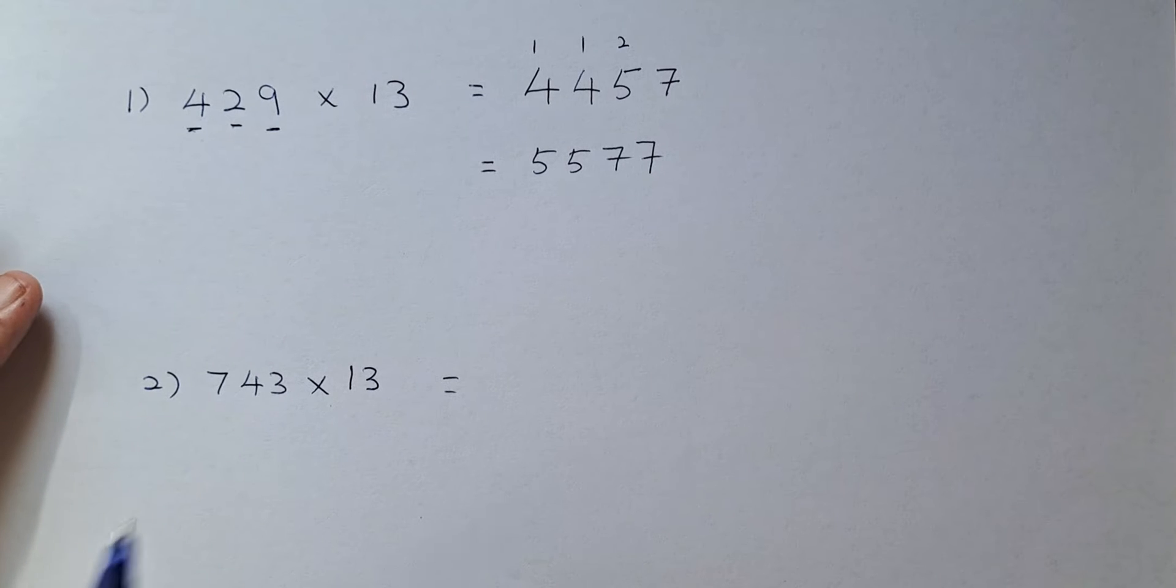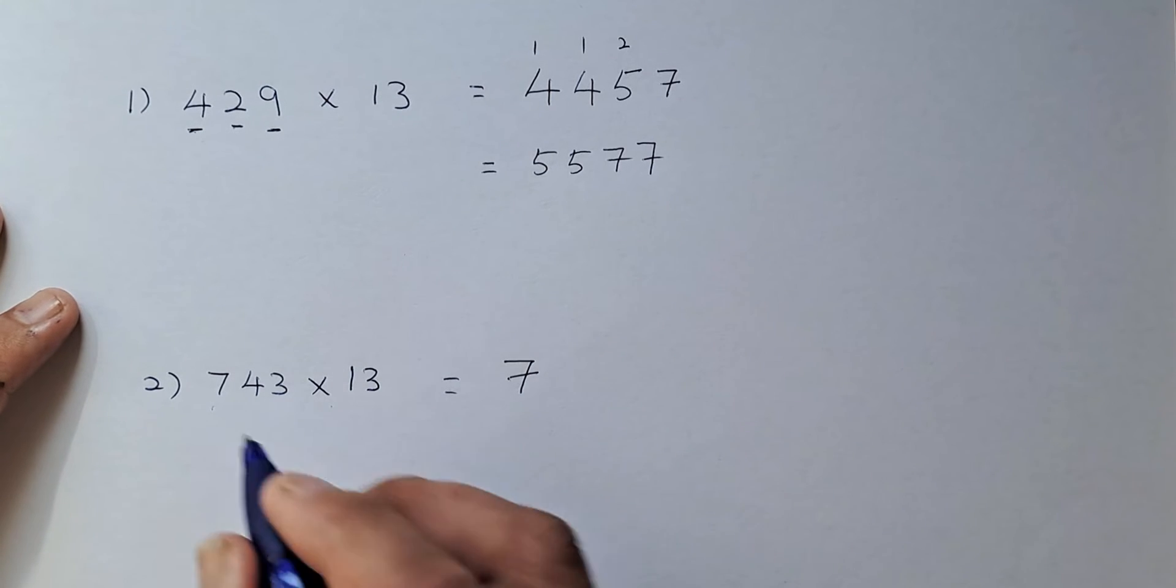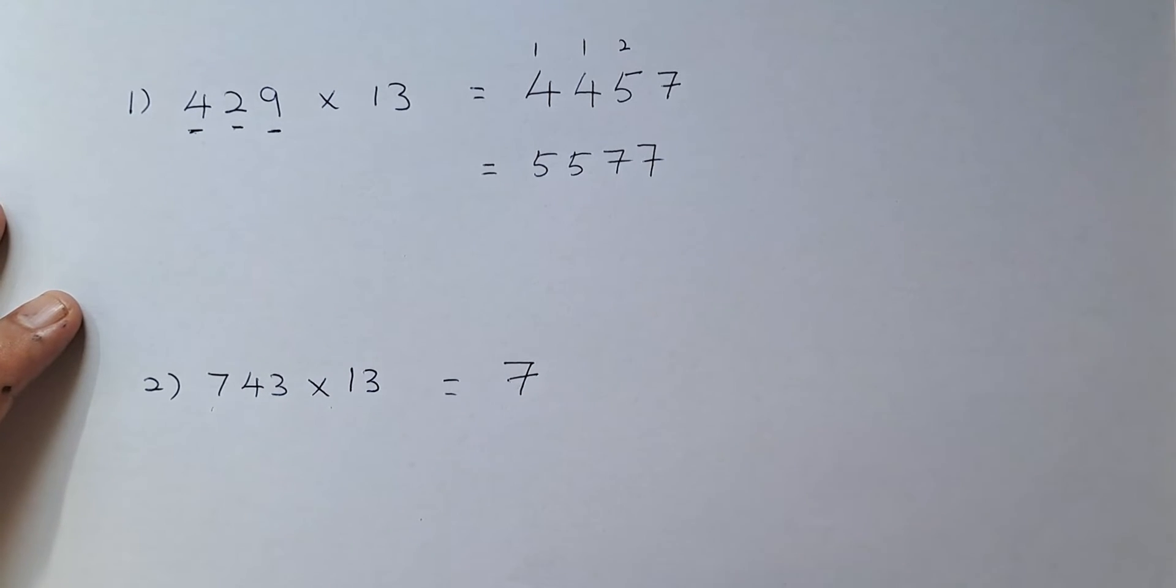So 743 times 13 is the same. So the 7 will always be the first number because the same number as the first number there. And then we are working it out.